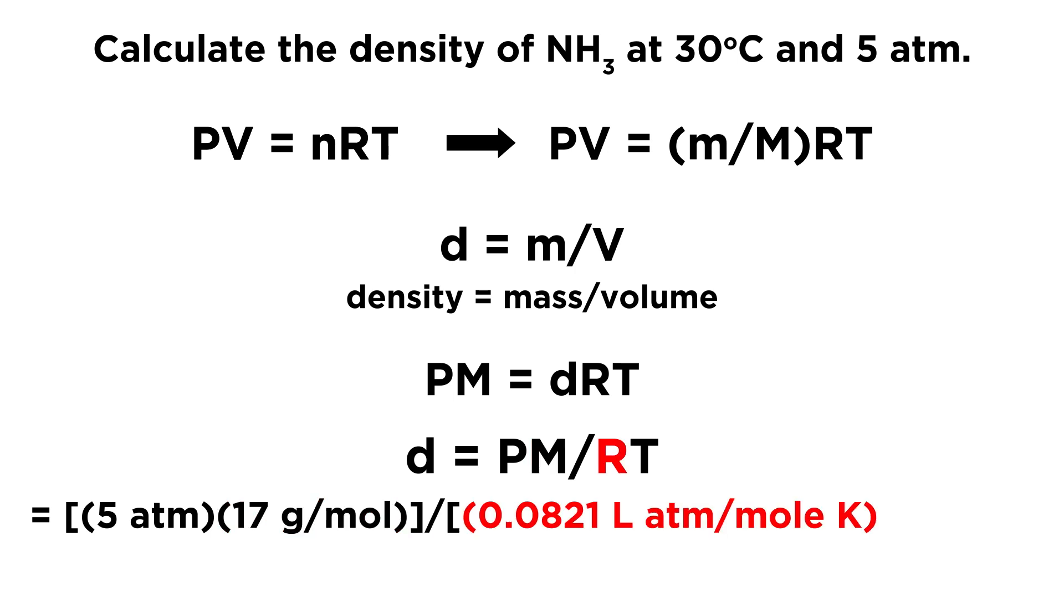Then we have the gas constant, which as always in this context is going to be 0.0821 liters atmospheres per mole Kelvin, and then the temperature is given to us, but remember we always need to convert from Celsius to Kelvin. That is our absolute temperature scale. So we're going to add 273, and that gives us 303 Kelvin.